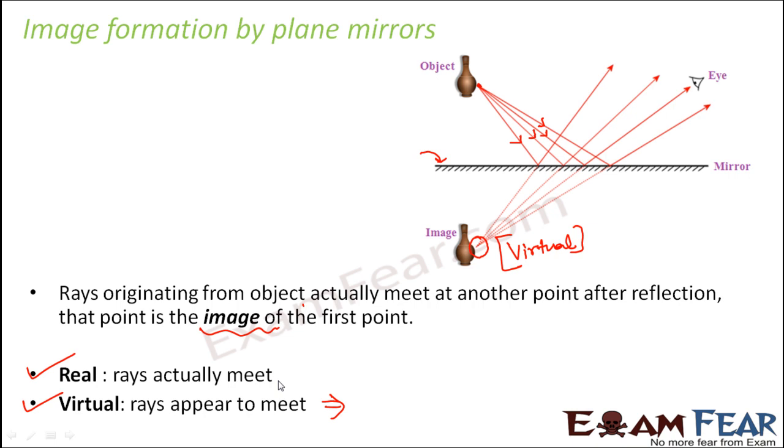Now how can you experimentally see that plane mirrors cannot form real images? Because if any mirror is able to form real image, then that image can be obtained on a screen. But in case of a plane mirror, the image is always behind the mirror. So if you stand in front of the mirror, you see yourself behind the mirror, but you cannot see yourself on another screen beside you. So that's how you can see that the image is obtained on the other side of the mirror.